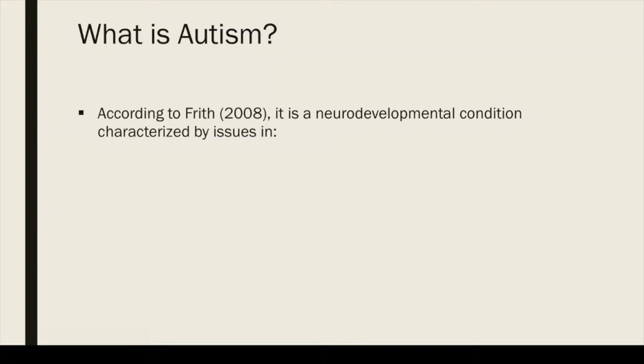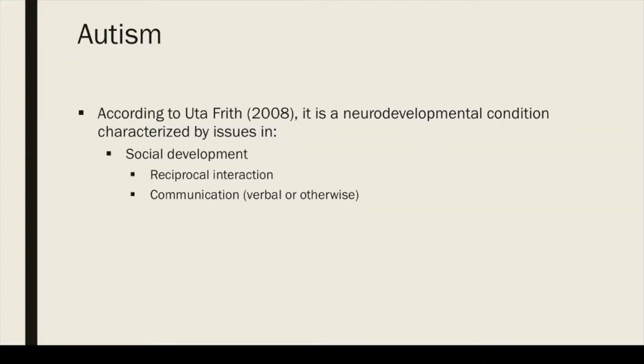One of the features of the mind-reading model proposed by Baron-Cohen is that it provides an explanation of some of the most salient aspects of autism. According to Uta Frith, autism is a neurodevelopmental condition characterized by issues in social development such as reciprocal interaction and communication, whether verbal or non-verbal, as well as by repetitive activities and narrow interests.